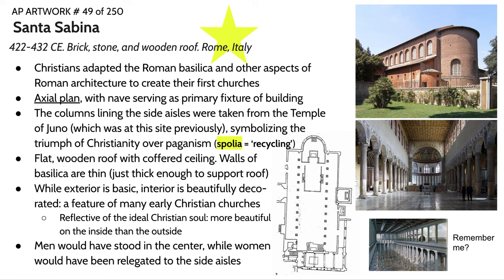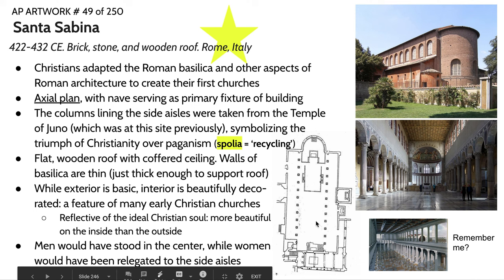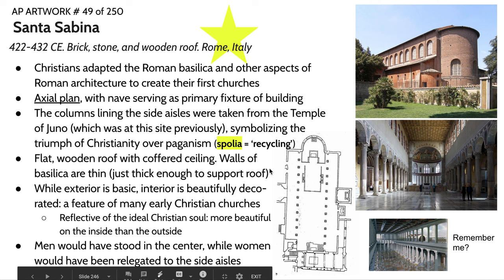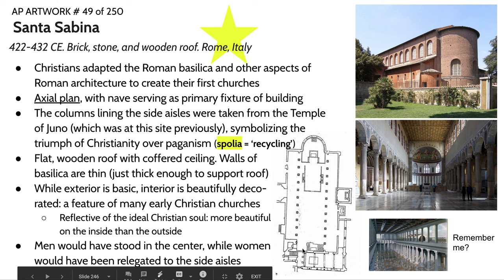Spolia is essentially a fancy word for architectural recycling — taking elements from old buildings and incorporating them into new ones, rather than reinventing the wheel. The roof of Santa Sabina has a flat coffered ceiling; coffers are niches carved out to reduce the ceiling's weight, as seen in the Parthenon. The walls are relatively thin, just thick enough to support the roof — appropriate for a moderately sized church. Churches begin small and grow massive by the Gothic era. In terms of congregation, men were allowed in the nave while women were relegated to the side aisles, as worship was very often segregated by gender.